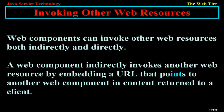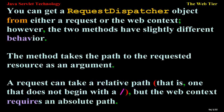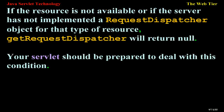Invoking other web resources. Web components can invoke other web resources both indirectly and directly. A web component indirectly invokes another web resource by embedding a URL that points to another web component in content returned to a client. While executing, a web component directly invokes another resource by either including the content of another resource or forwarding a request to another resource. To invoke a resource available on the server, you must first obtain a RequestDispatcher object by using the getRequestDispatcher(URL) method. You can get a RequestDispatcher object from either a request or the web context; however, the two methods have slightly different behavior. A request can take a relative path, but the web context requires an absolute path. If the resource is not available, getRequestDispatcher will return null.